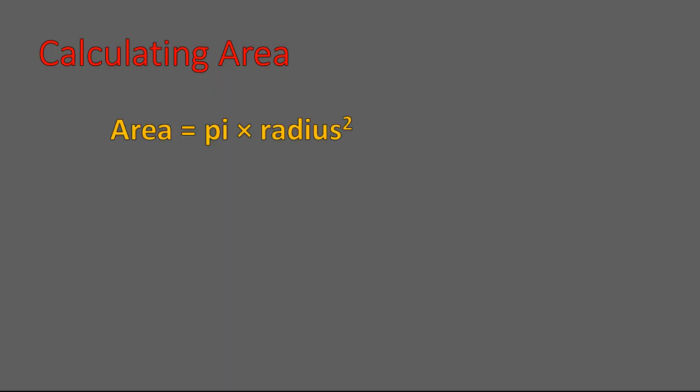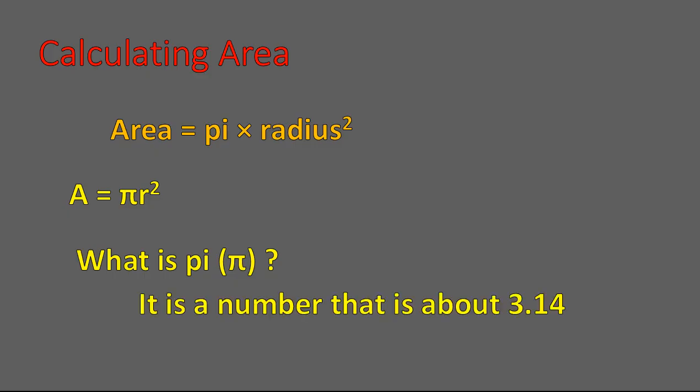First off, let's calculate the area of a circle. The area of a circle equation is pi times the radius squared. Pi is a number that's about 3.14, so for our calculations we're going to use the number 3.14. So we will say area is approximately equal to 3.14 times radius squared.